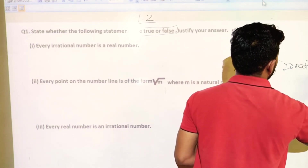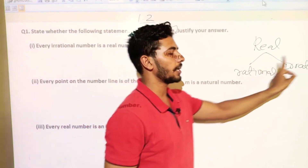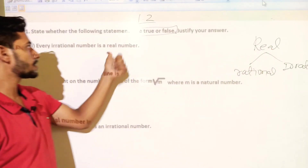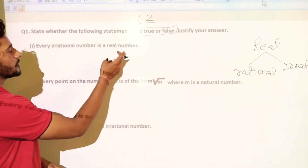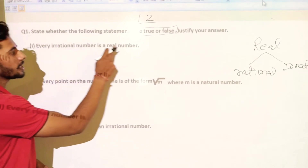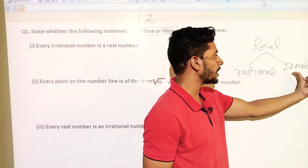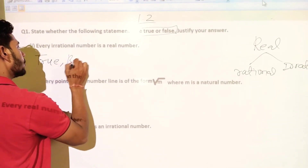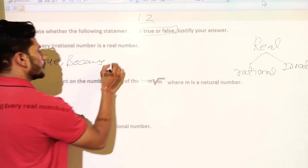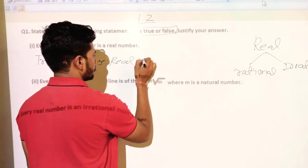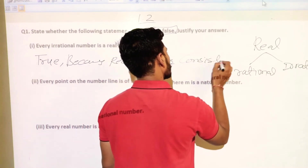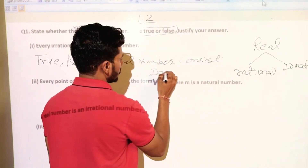This statement means that real numbers include irrational numbers. The statement is true because real numbers consist of irrational numbers.